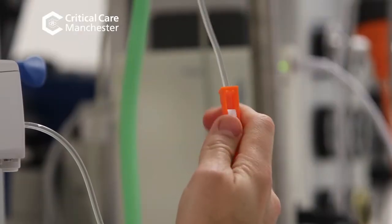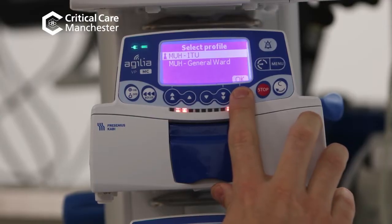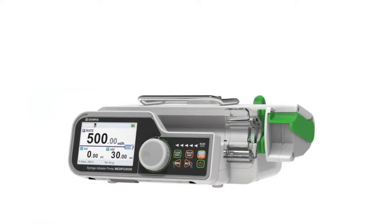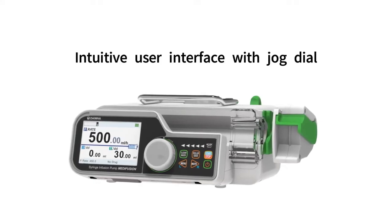Infusion pumps may be powered electrically or mechanically. Different pumps operate in different ways. For example, in a syringe pump, fluid is held in the reservoir of a syringe and a movable piston controls fluid delivery.